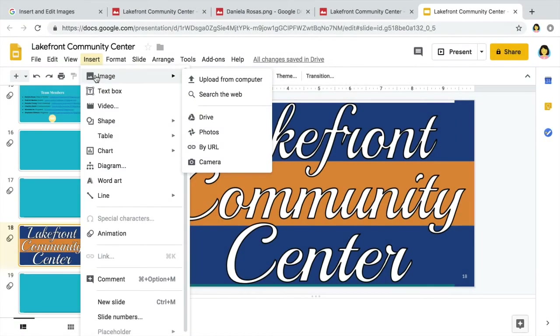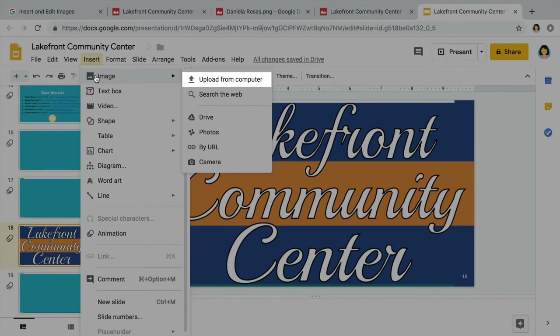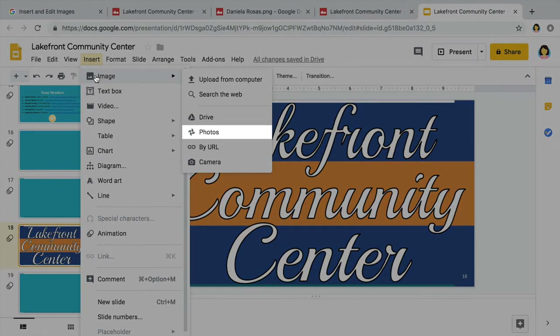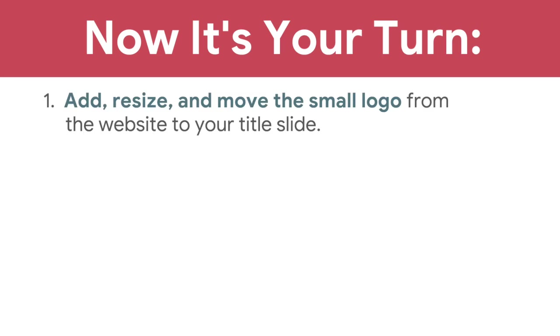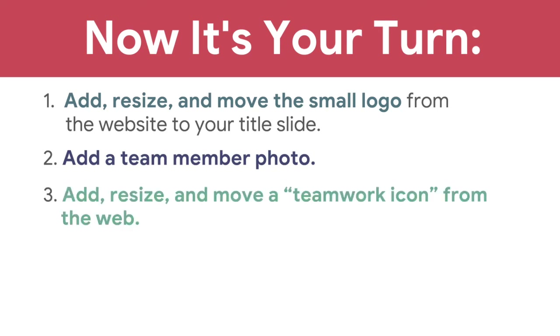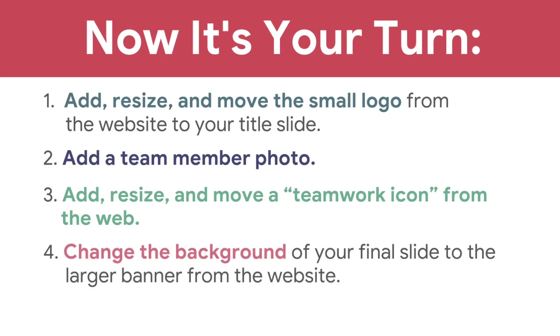As you create your own presentations, you can use these same steps to add images from your device, a web link, or Google Photos. Move on to the next video to insert videos into your presentation. Now it's your turn: add, resize, and move the small logo from the website to your title slide; add a team member photo; add, resize, and move a teamwork icon from the web; and change the background of your final slide to the banner from the website.